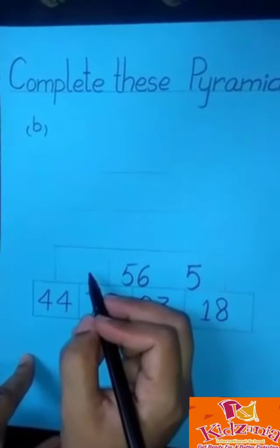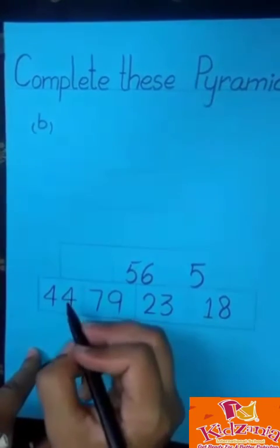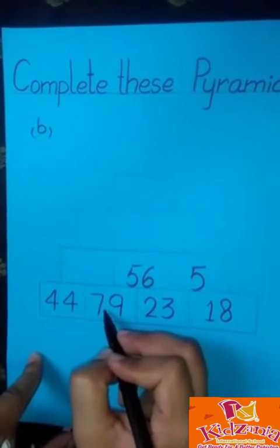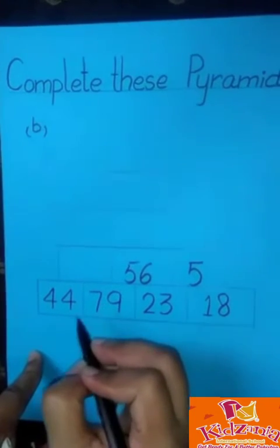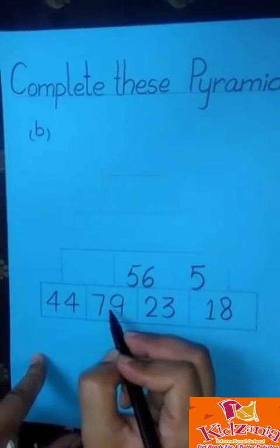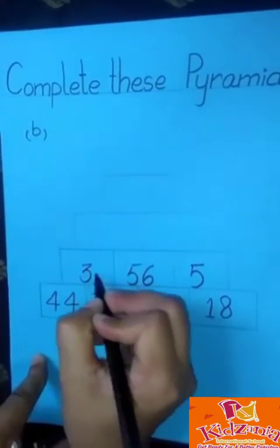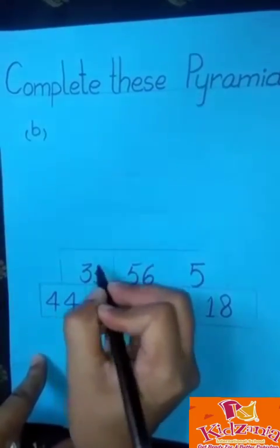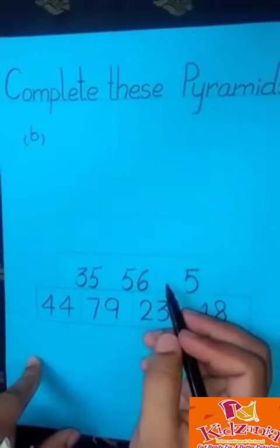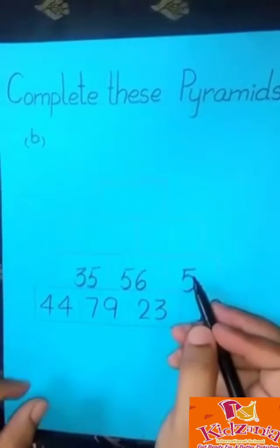Okay students, now we fill the last box of this row. We subtract 79 by 44. When we subtract 79 by 44, we get the answer of 35. Okay students, we have filled the third row of this pyramid.